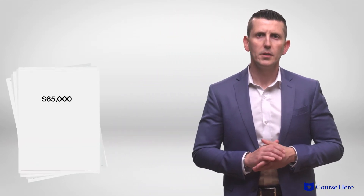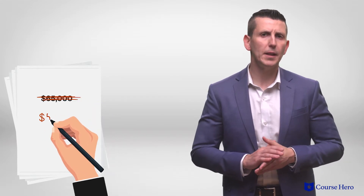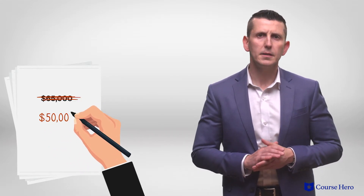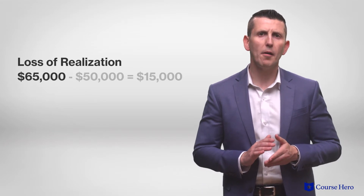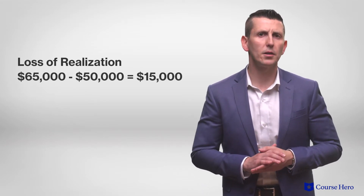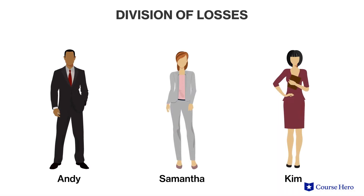What if during the realization process the final assets sell at a loss rather than a gain? Suppose the assets were sold for fifty thousand dollars. Since the assets had a book value of sixty-five thousand dollars, the partnership must divide a fifteen thousand dollar loss. The loss is allocated based on each partner's distributive share: forty percent, or six thousand dollars, to Andy and Samantha each, and twenty percent, or three thousand dollars, to Kim.